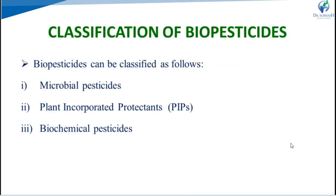Classification of biopesticides. Biopesticides can be classified in three categories: microbial pesticides, plant incorporated protectants, and biochemical pesticides.